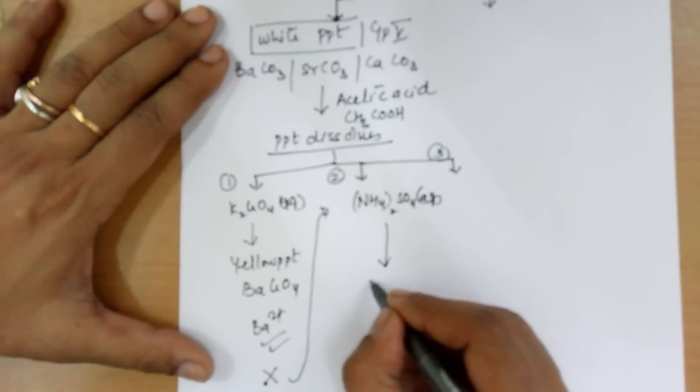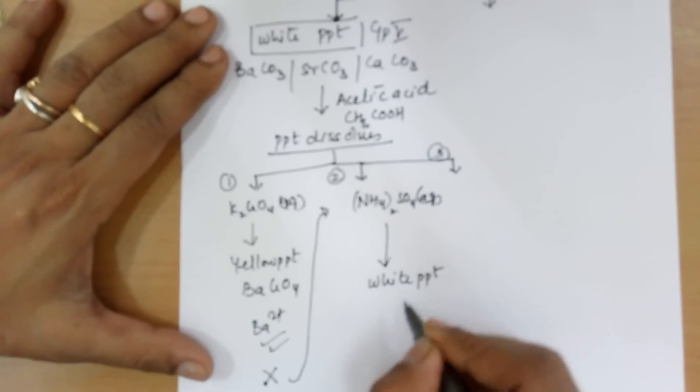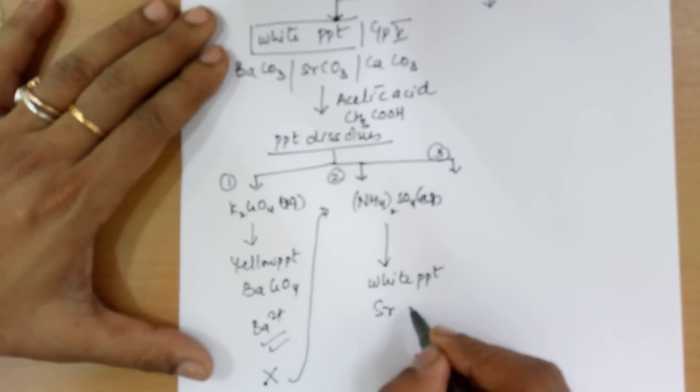And you would get again a white PPT this time. But the PPT would be of strontium sulfate. And you confirm strontium.